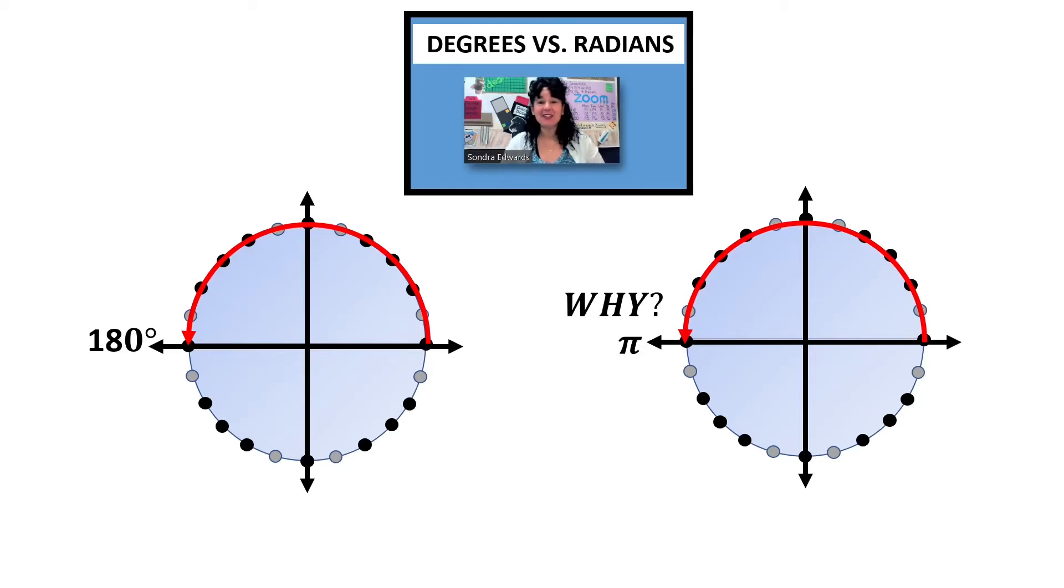Hello, I'm Mrs. Edwards and today we're going to discuss two systems of measuring angles: degrees and radians. Most people don't have too much trouble measuring in degrees, so our focus is going to be on radians and what is a radian.